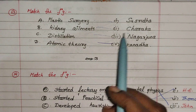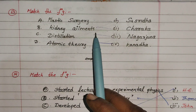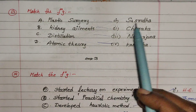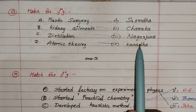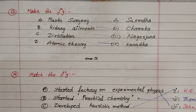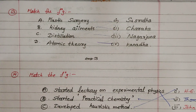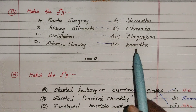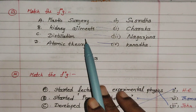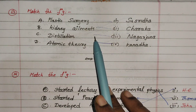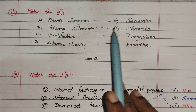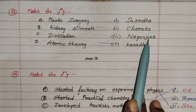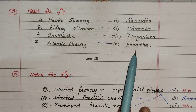Next, in the new concept, scientist's name — Plastic Surgery, Kidney Elements, Distillation, Atomic Theory. The Indian scientists are: Sushruta — Plastic Surgery; Charaka — Medicine; Nagarjuna — Distillation; Kanada — Atomic Theory. These are all ancient Indian saints and scientists.